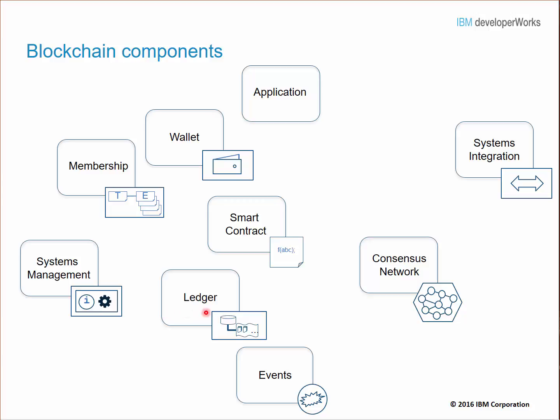Let's start with the ledger. The ledger contains a blockchain of invoked transactions, and it also contains a state known as world state. World state is simply a collection of variables that reflect the results of the previously invoked transactions. So at any given point in time, world state reflects the state of the ledger after all the transactions up to that point in time have been invoked.